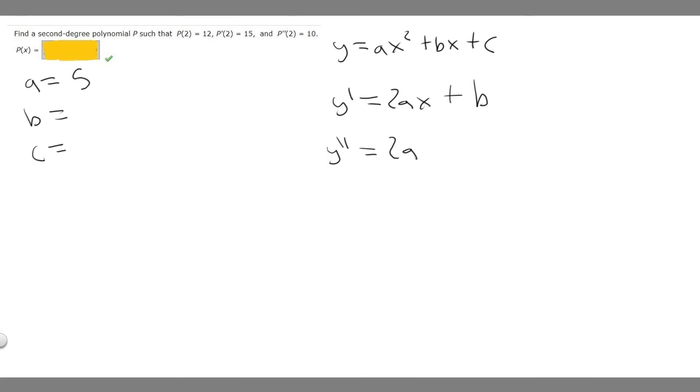Now let's find b by plugging a and x into this formula. y' is 15, so 15 = 2 times a (which is 5) times x (which is 2) plus b.